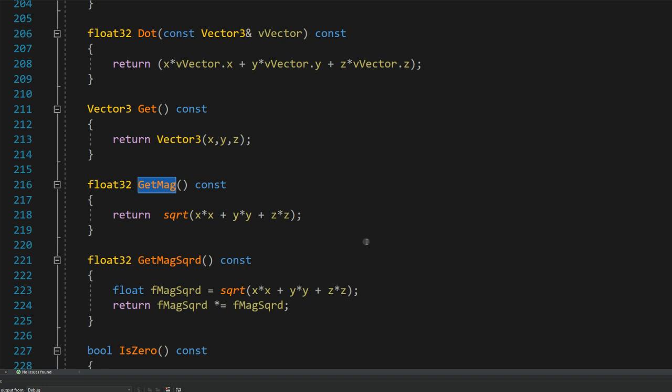The dot product is the sum of the multiplication of the corresponding components of a vector with another. In this circumstance, we are multiplying the components of the vector by itself. The result gives us the square of the distance.